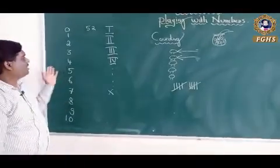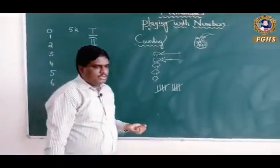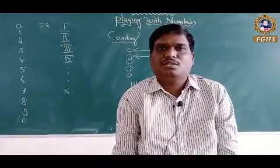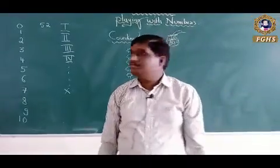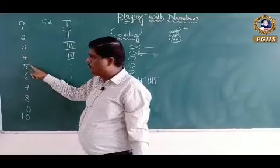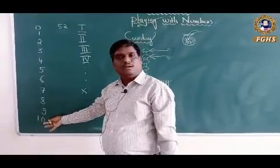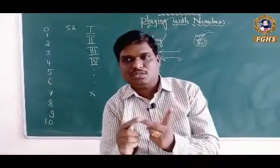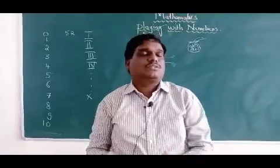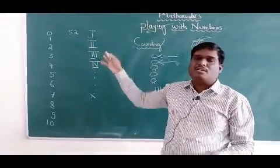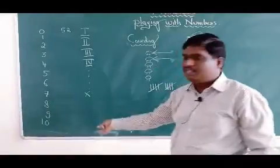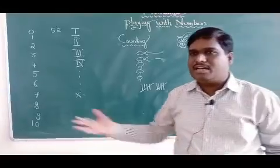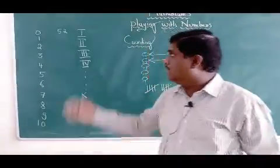After the tally system, we moved to the normal number system that we use today. Just for your information, digital computers use the binary number system. They do not use 2, 3, 4, 5, 6, 7 — they use only zero or one. Because of only two digits, it is called the binary number system. We use the decimal number system because we use our fingers to count — that's why it is comfortable to us.